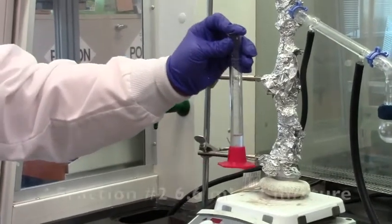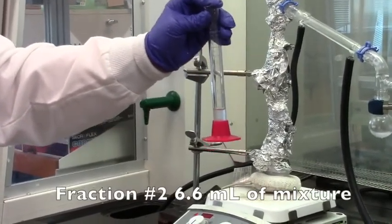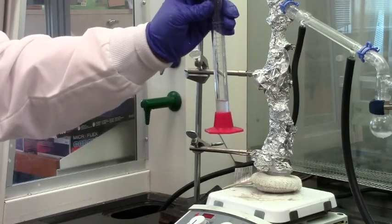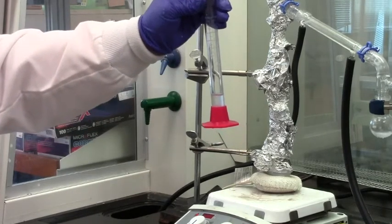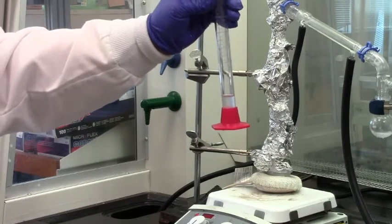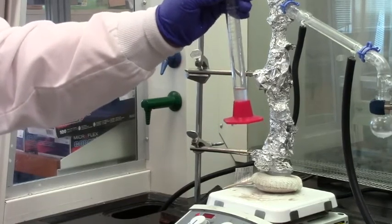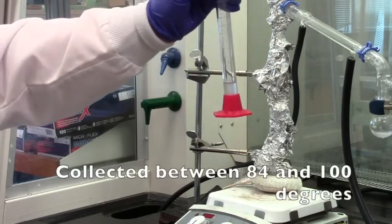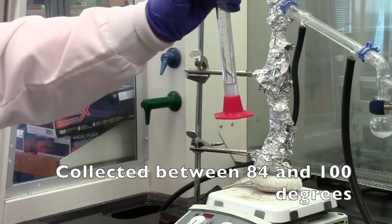Just measured the volume of flask number two, fraction number two, and got 6.6 mls of the mixture, which most likely will be a mixture of cyclohexane and toluene. 6.6 mls of that mixture collected. And this was collected between 84 degrees up to 100 degrees.